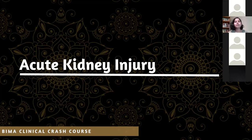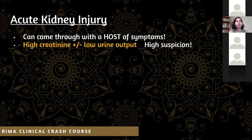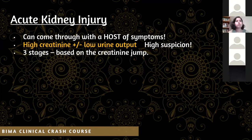Acute kidney injury presents with low urine output and rising creatinine. There are three stages of AKI based on the creatinine jump compared to baseline. Practically, we classify AKI by anatomy: pre-renal, renal, or post-renal — which is why I took us through the renal tract anatomy at the start. With something like AKI, it's important to consider the entire renal tract anatomy and physiology.